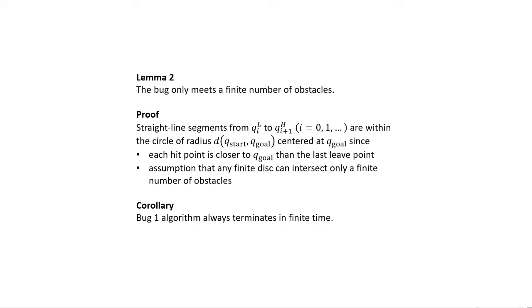We prove Lemma 2 by noting that the straight line segment from the ith leave point to the (i+1)th hit point lies within the disk of radius d(Q_start, Q_goal) centered at the goal. We can never have a segment beyond this radius because each hit point is closer to Q_goal than the last leave point. We also assume that any finite disk can hold only a finite number of obstacles — an assumption we can all accept. Since the bug meets a finite number of obstacles and meets each at most once, the Bug 1 algorithm terminates in finite time.